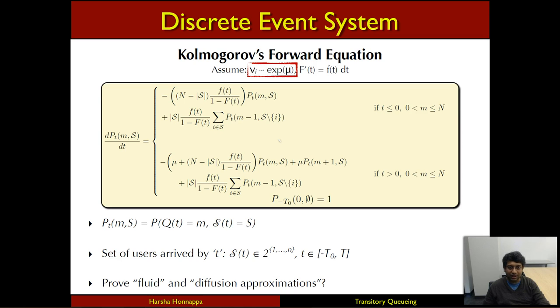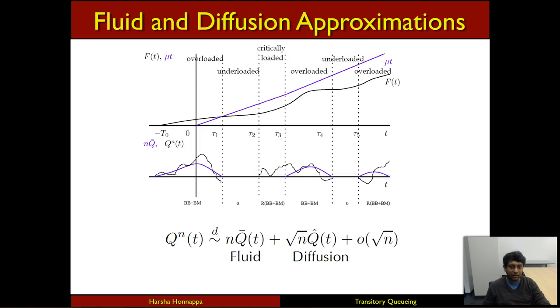But analytically, the best thing that you can do is try to get approximations. In particular, in this work, we develop so-called fluid and diffusion approximations to the queue length process and how the queue length varies over time. We can rigorously show that the queue length process is well approximated by a so-called Brownian motion process.